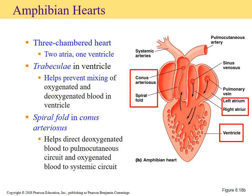The next heart to explore is the amphibian heart. Remember, the amphibian heart has a three-chamber setup — two atria on top and one ventricle — and the ventricle does its best not to mix oxygenated and deoxygenated blood.